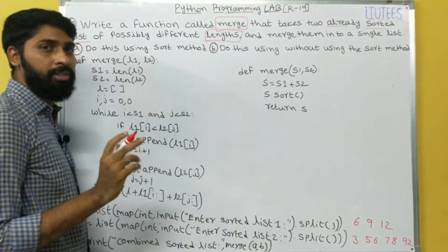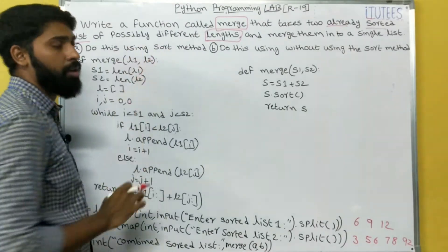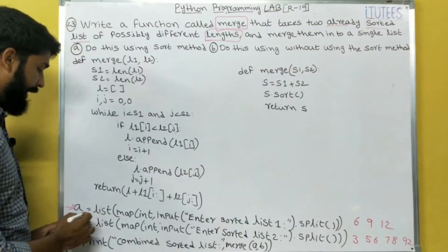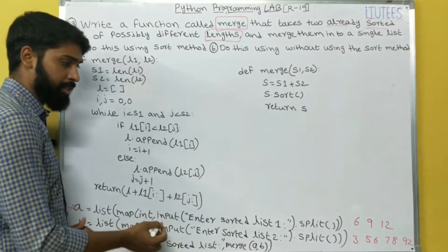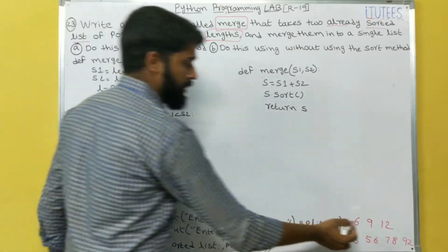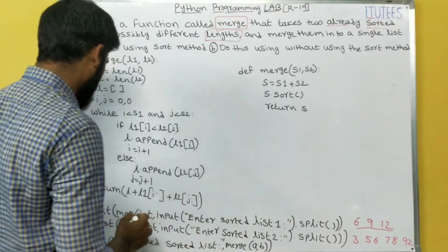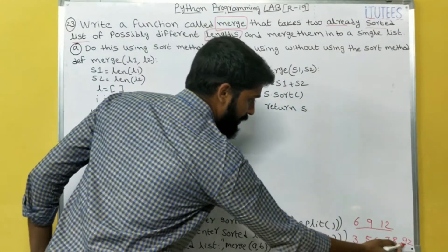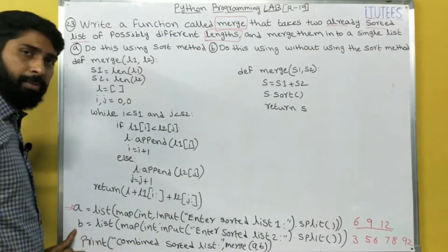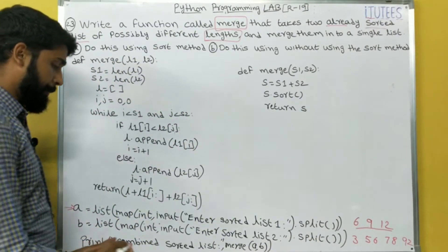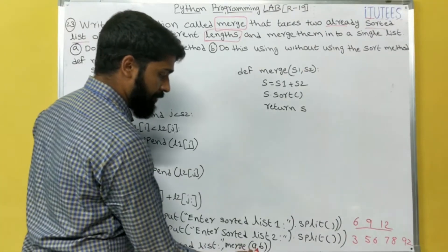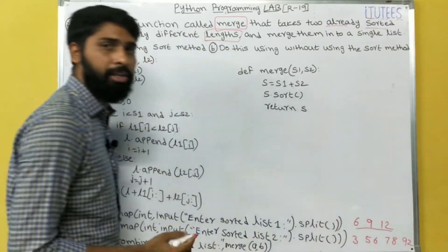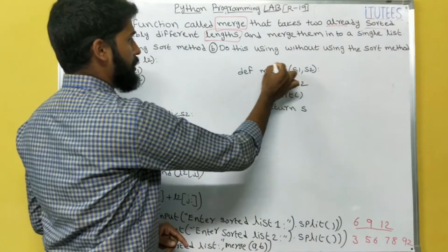We are going to do this in two ways: one using the sort method, and one without using the sort method. A equals list of map of int of input — that means we enter 6, 9, 12 as list A. Similarly list B is 3, 56, 78, 92. Then we print the combined sorted list by calling merge of A, B.